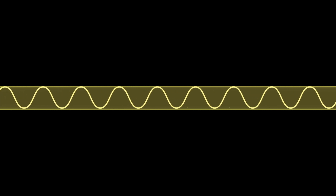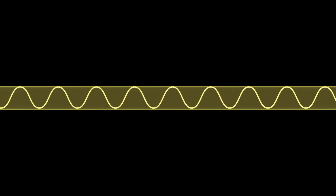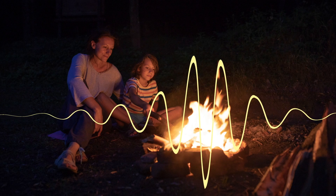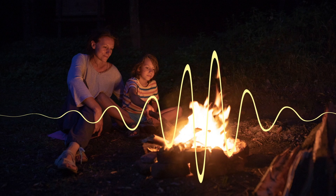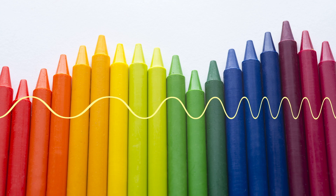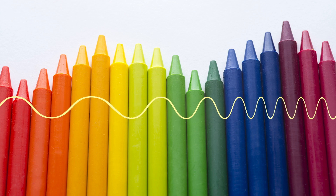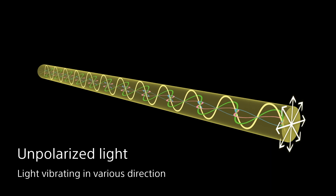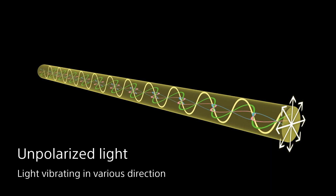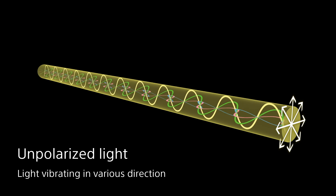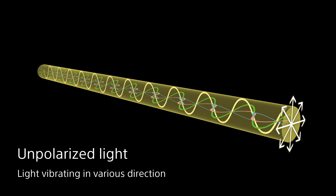Light behaves like a wave. Brightness is expressed as amplitude and colour is expressed as wavelength. For example, light from the sun or a fluorescent lamp vibrates in various directions. These types of lights are called unpolarised light.